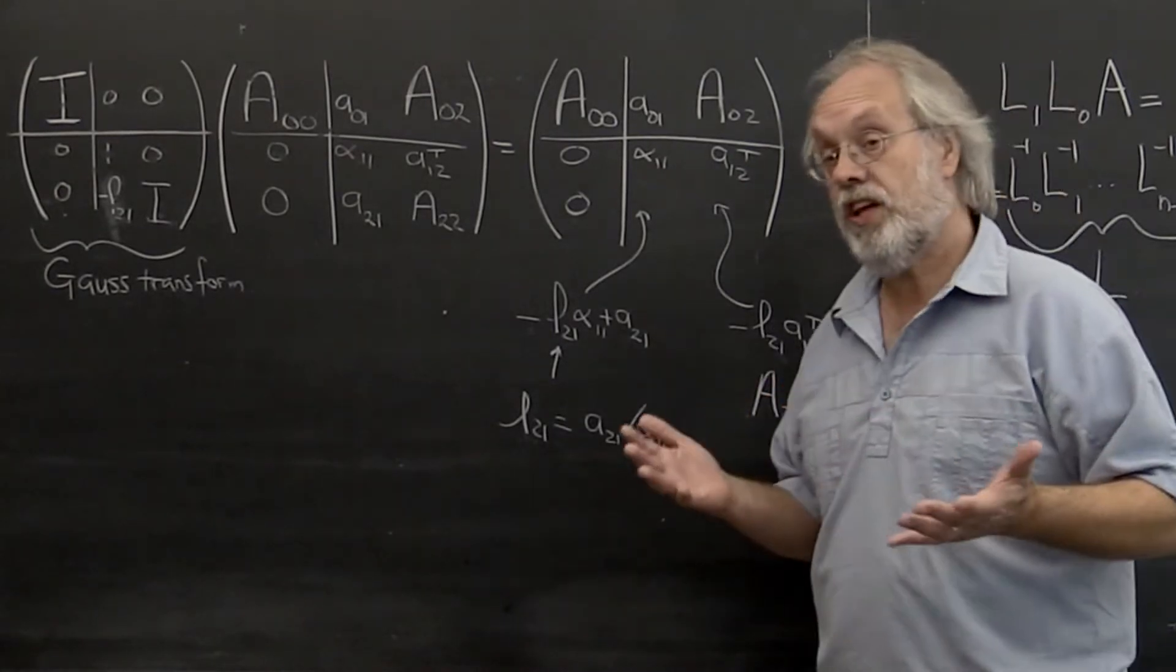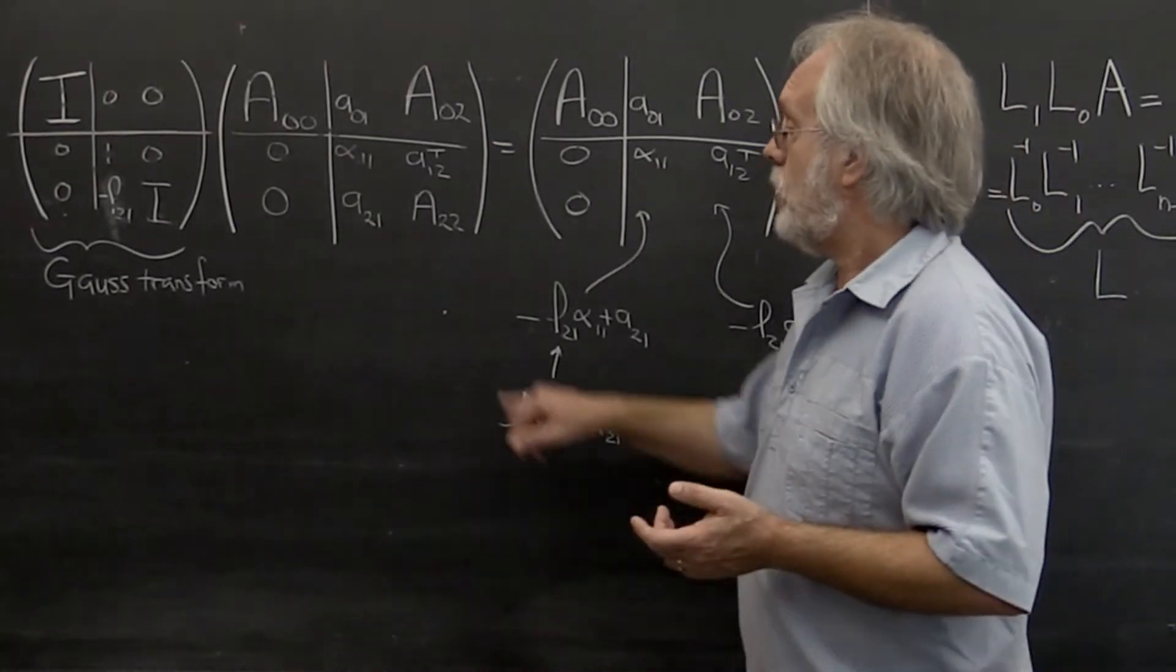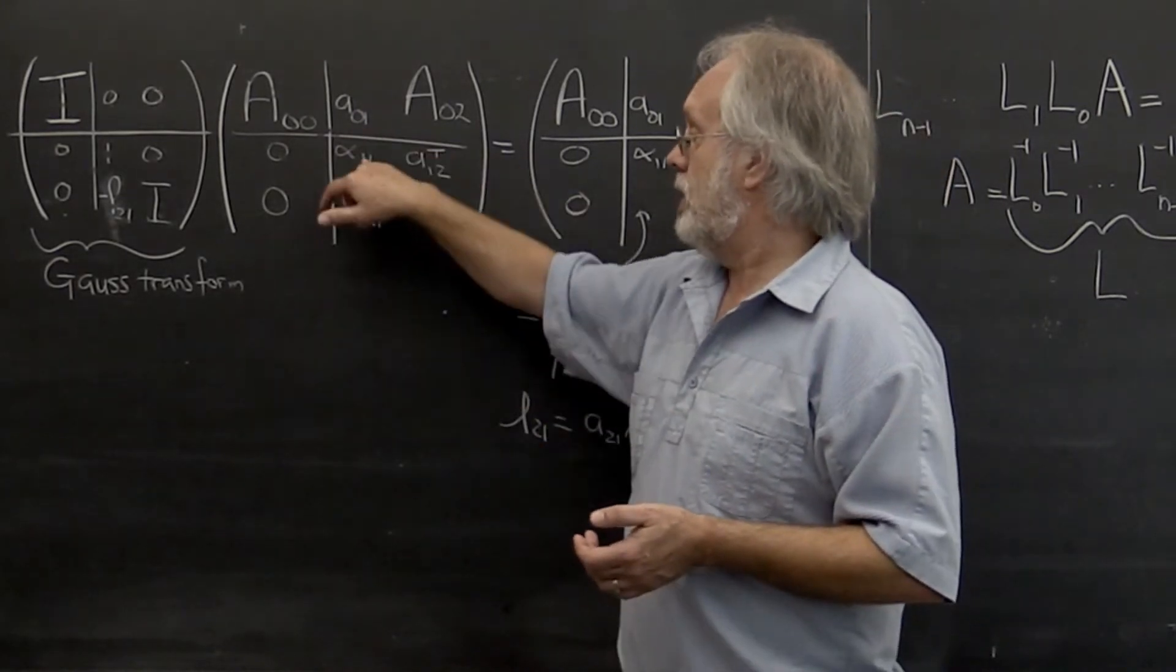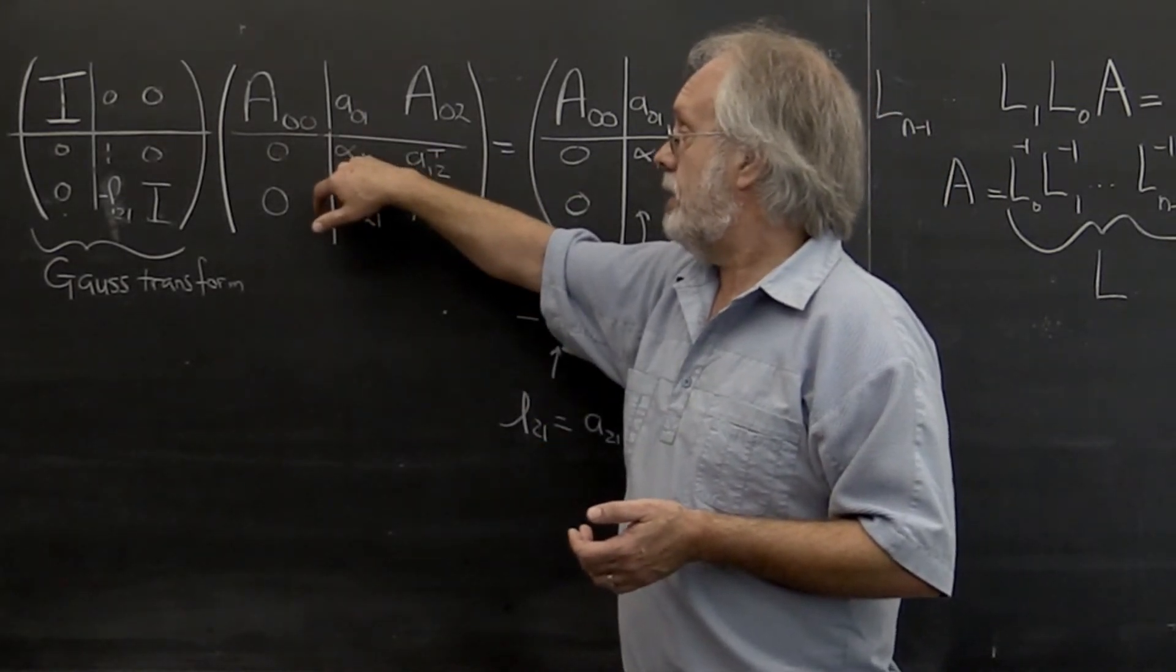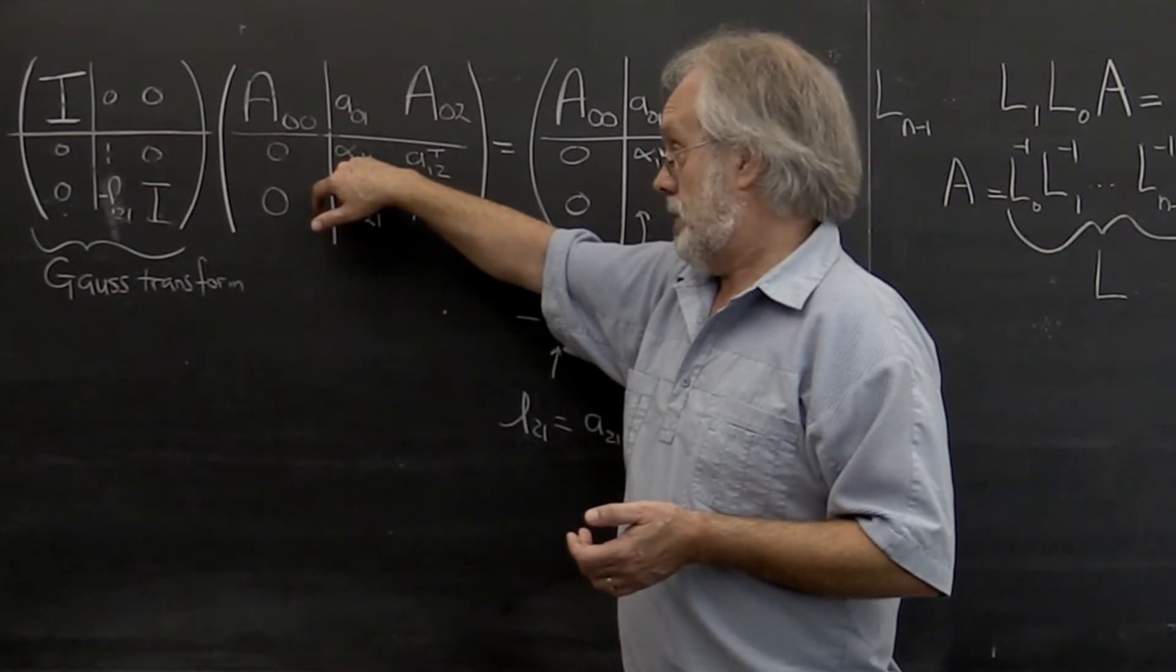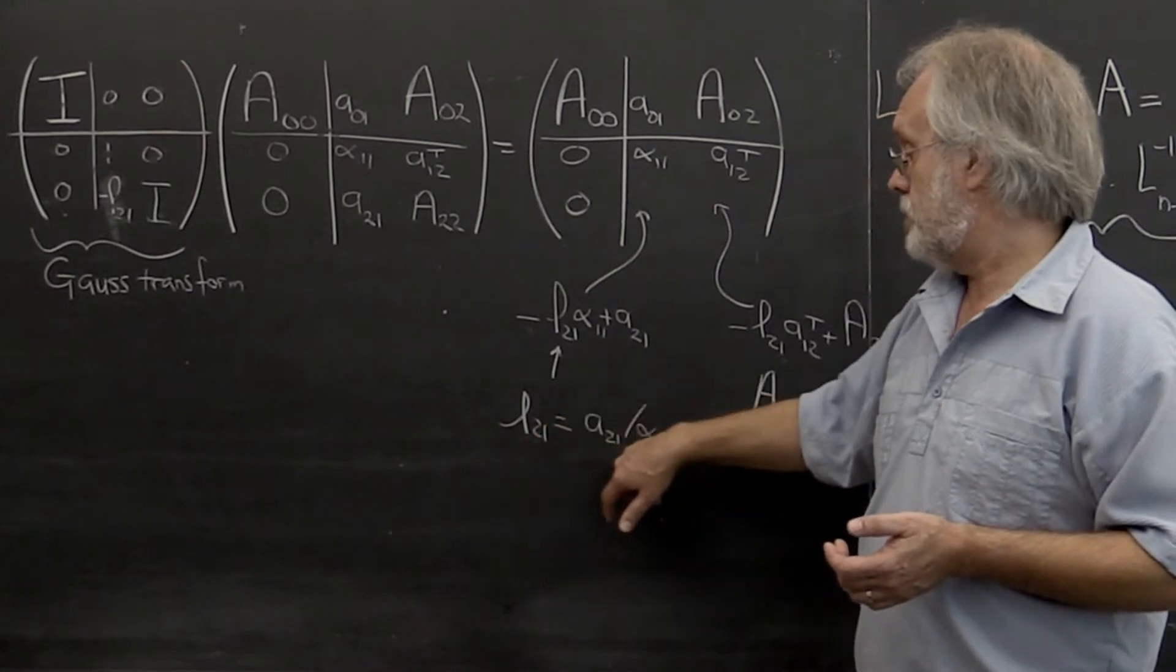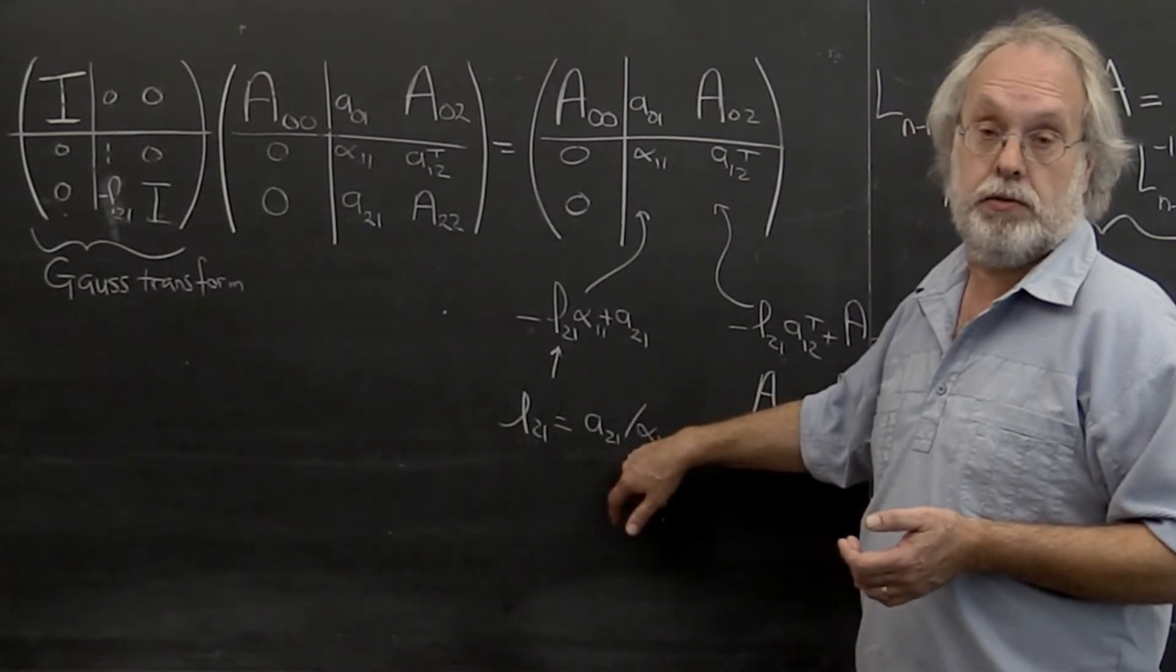Now where can things go wrong? Things can go wrong if somewhere along the line the entry on the diagonal is zero and therefore when you compute your multipliers you end up dividing by zero.